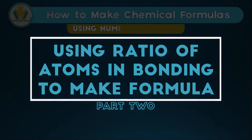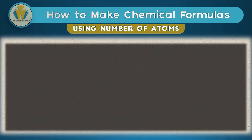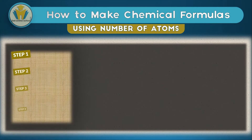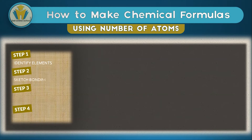Now let's look at some methods we can use to write chemical formulas. The first is using the number of atoms — this is the easiest and most basic way. We carry out a four-step procedure: first, identifying the elements in the compound; second, sketching a bonding structure of those elements; third, observing the number of atoms for each element; and fourth, generating the formula.